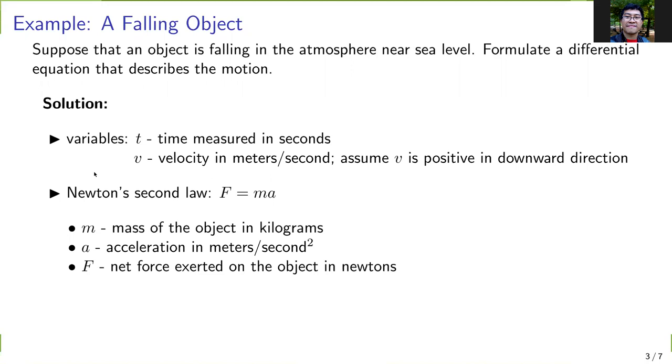The principle we can use to describe the falling object is Newton's second law. In this case, F = ma, where m is the mass of the object in kilograms, a is the acceleration in meters per second squared, and F is the net force exerted on the object in newtons. We can rewrite F = ma as F = m dv/dt.